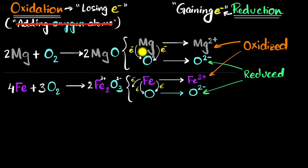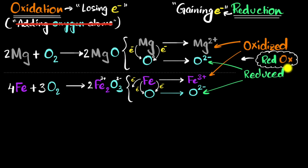Now think about this: if you have a reaction in which something is getting oxidized — meaning something is losing electrons — then something else must be gaining electrons, so something else must be reduced. Such reactions, in which something gets oxidized and something else gets reduced, we give a name to: we call them redox reactions, because both reduction and oxidation must be happening. Do redox reactions need to involve oxygen? The answer is no, because our definition has become more general. Any reaction in which something is losing electrons and something else is gaining electrons becomes a redox reaction.